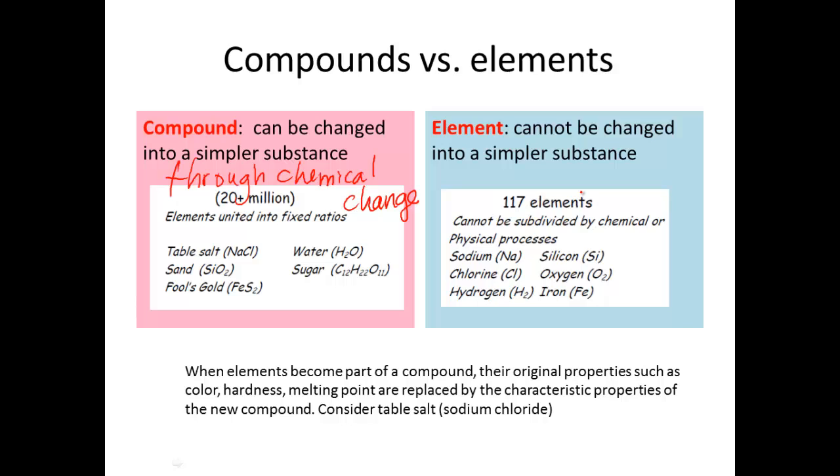Elements cannot be changed into simpler substances. Like I mentioned before, this is the fundamental component of matter. There's around 117 elements, give or take. They cannot be subdivided into simpler substances. And here are several examples. Sodium, chlorine, hydrogen, silicon, oxygen, and iron.